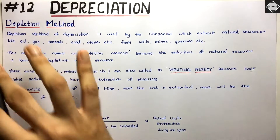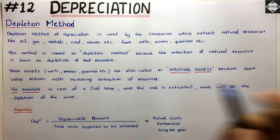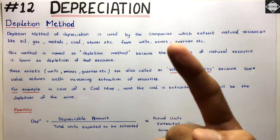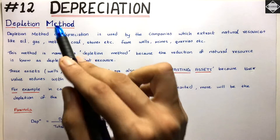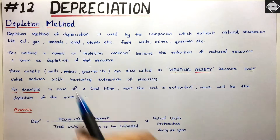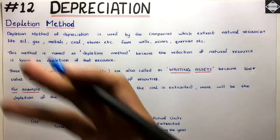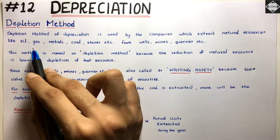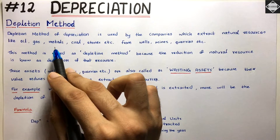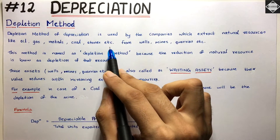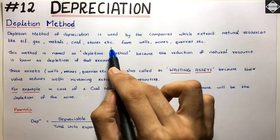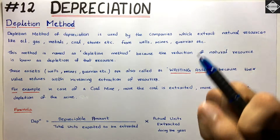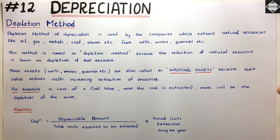The concept of depletion method is really simple and straightforward. The first thing is that this method is applied in those companies which extract natural resources like oil, natural gas, metals, coal, stones, etc.